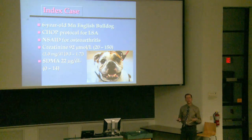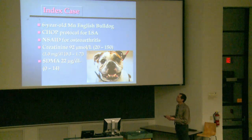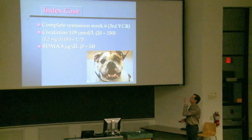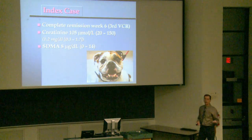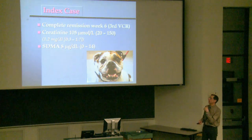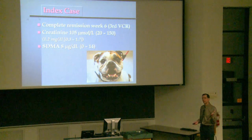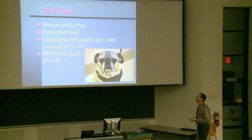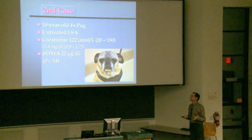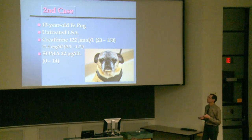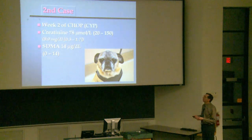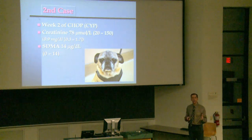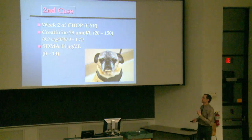The next day, Honey came in — a 10-year-old pug with naive lymphoma. Her creatinine was 122 (upper end of reference range) and her SDMA was also elevated. On the second week of CHOP protocol she was judged to be in complete remission; her creatinine had dropped, indicating some pre-renal elevation initially, and her SDMA had dropped as well. This led to the question of whether there's a disproportionate elevation of SDMA compared to creatinine in dogs with lymphoma.